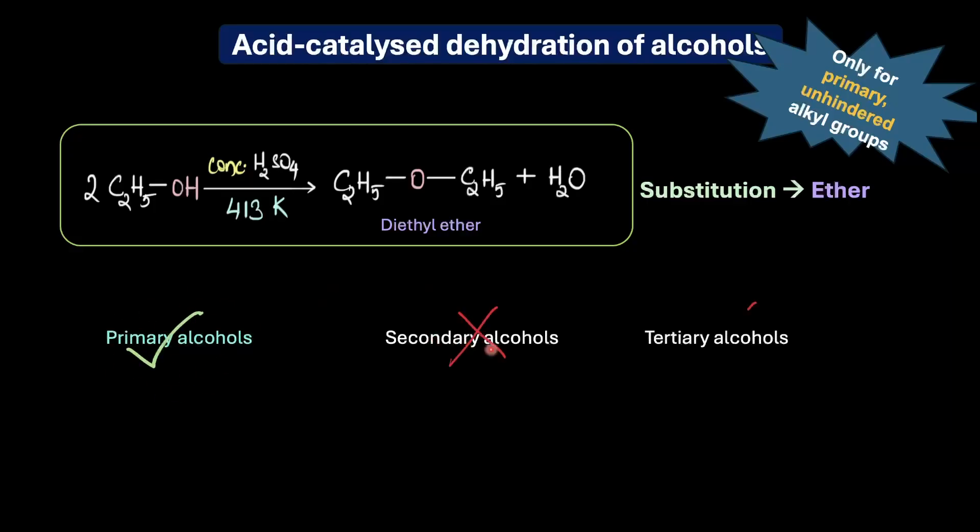Secondary and tertiary alcohols rarely give ethers under these conditions because they would more readily lose the water molecules on protonation to form stable carbocations than undergo an SN2 nucleophilic attack. We all know that secondary and tertiary carbocations are much more stable than primary carbocations, right?